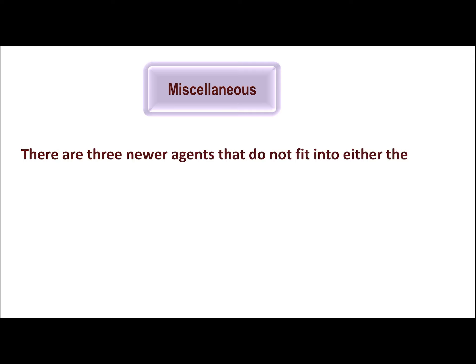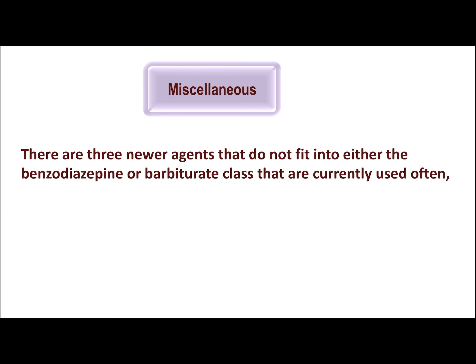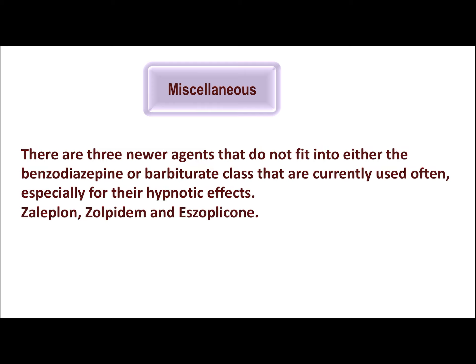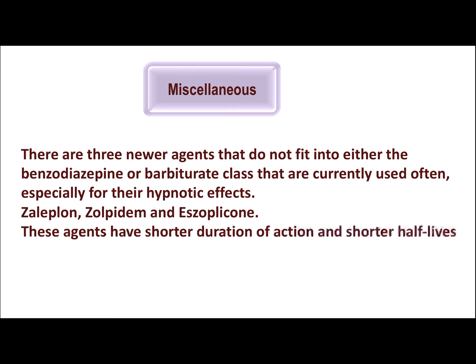Now let's look at the miscellaneous agents. There are three newer agents that do not fit into either the benzodiazepine or barbiturate class and are currently used often especially for their hypnotic effects: zaleplon, zolpidem, and eszopiclone. Zolpidem is an imidazopyridine, eszopiclone is a pyrrolopyrazine cyclopyrrolone, and its active S-enantiomer is eszopiclone, while zaleplon is a pyrazolopyrimidine. All three are highly selective agonists of the alpha-1 subunit-expressing GABA-A receptors and have short durations of action and shorter half-lives relative to most benzodiazepines.